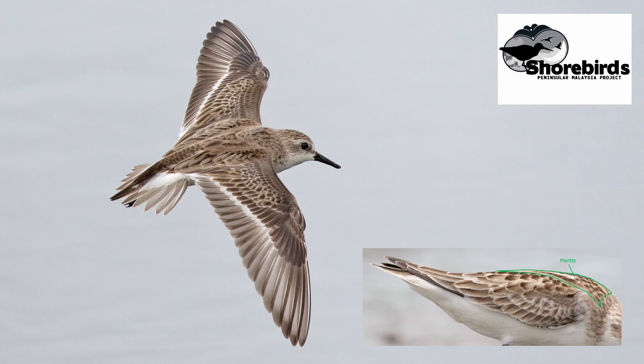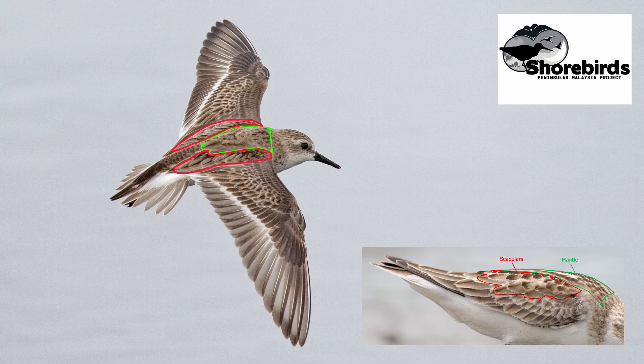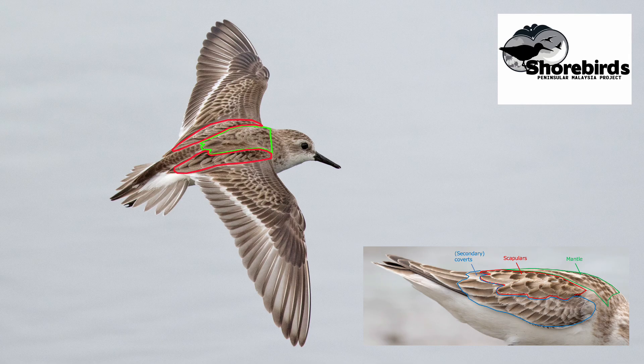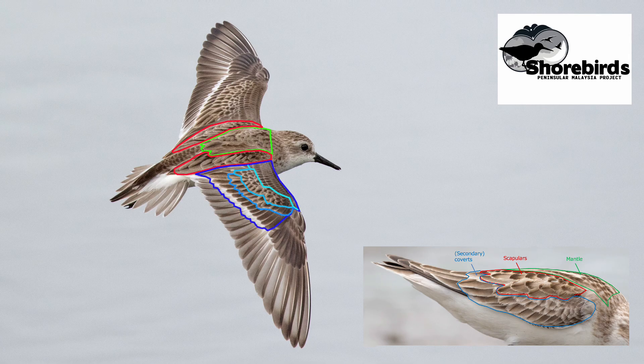Here's where these feather tracks are on a flying bird. First of all the mantle, which sits kind of midships on the body. Then the scapulars, sitting either side of the mantle at the base of the wings. Then the secondary wing coverts — and here we can see why they're called secondary wing coverts, because they cover the bases of the secondaries. You can see the four different types: the marginal wing coverts at the front of the wing, the leading edge, then the lesser coverts, the median coverts, and the largest ones with the white tips, the greater coverts.